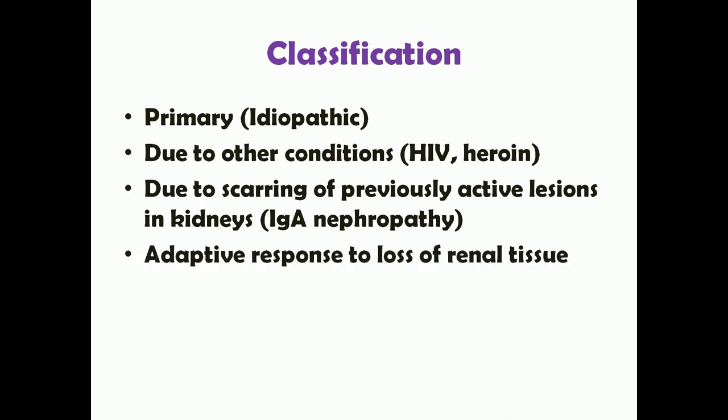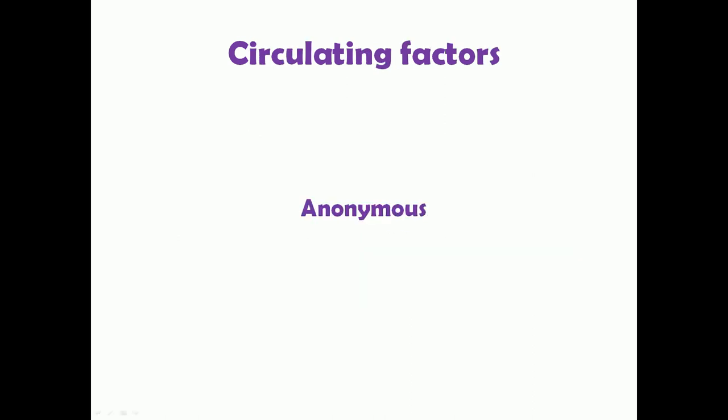FSGS can also occur as an adaptive response to loss of renal tissue. In conditions with partial loss of renal tissue, the kidneys compensate through compensatory hypertrophy. Initially this hypertrophy helps overcome the functional loss, but later the overload leads to hyalinosis and sclerosis of the hypertrophied areas — an important pathogenetic factor for FSGS. There are also inherited forms of FSGS, which are beyond the scope of this video.